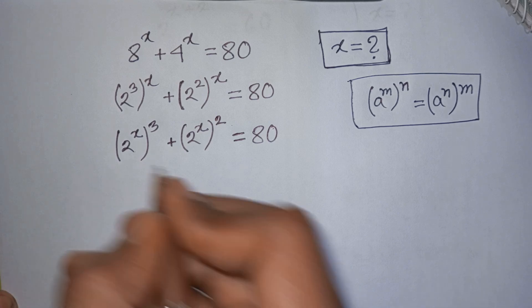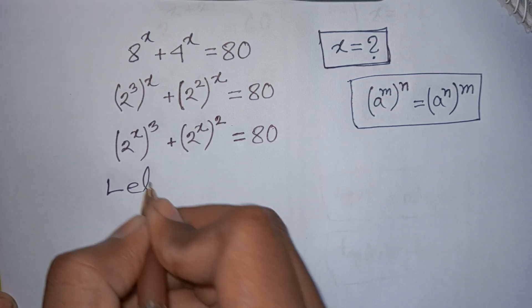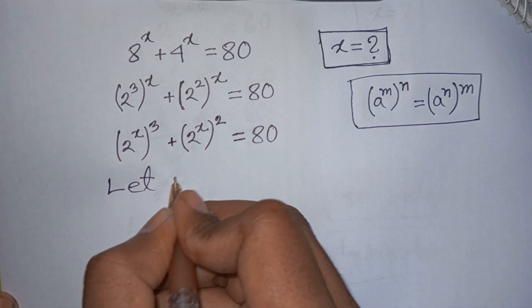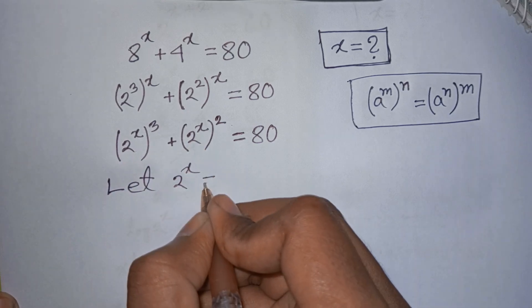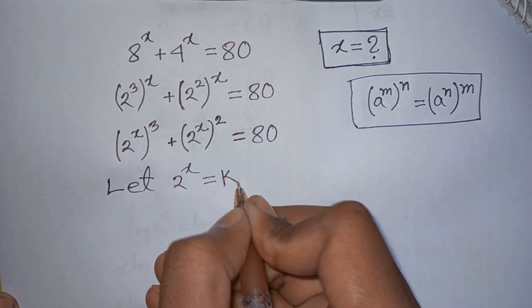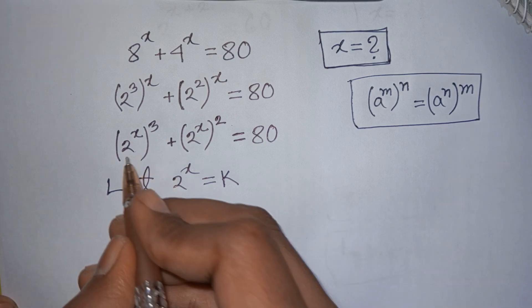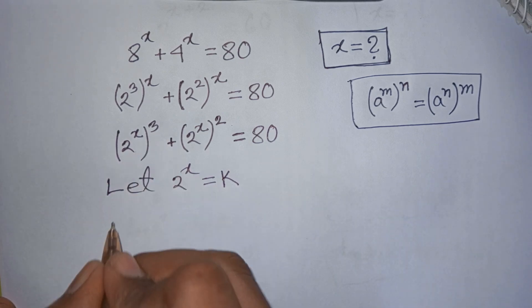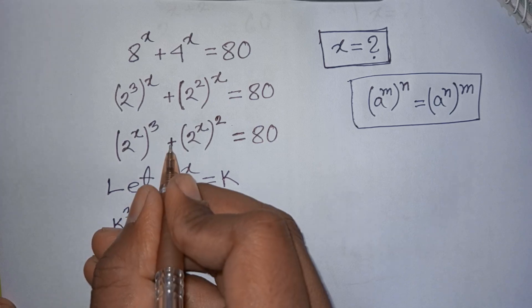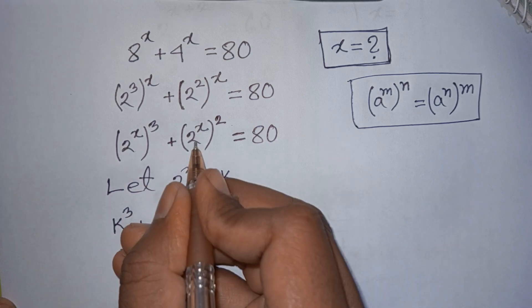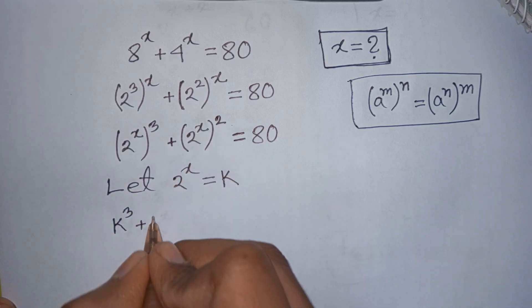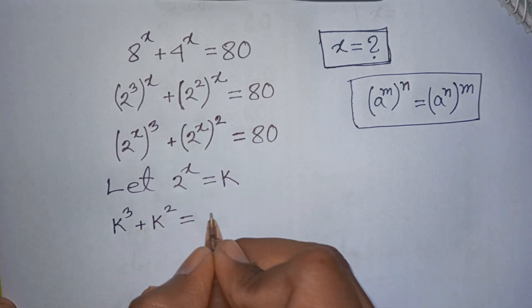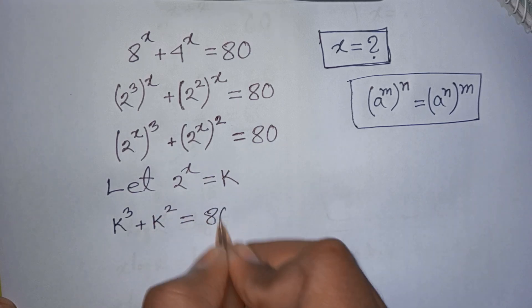Now, let 2 power x be substituted by k. So this equation will be k power 3 plus k power 2 is equal to 80.